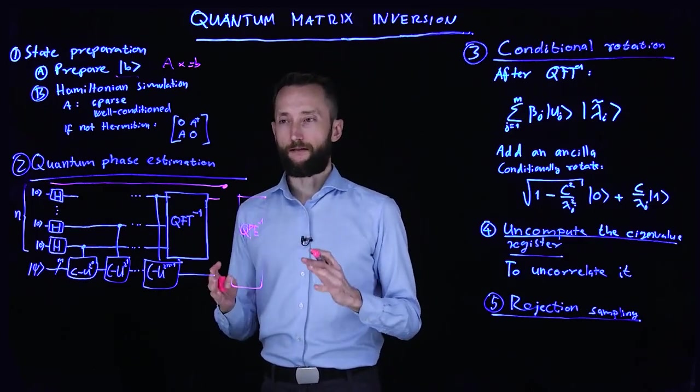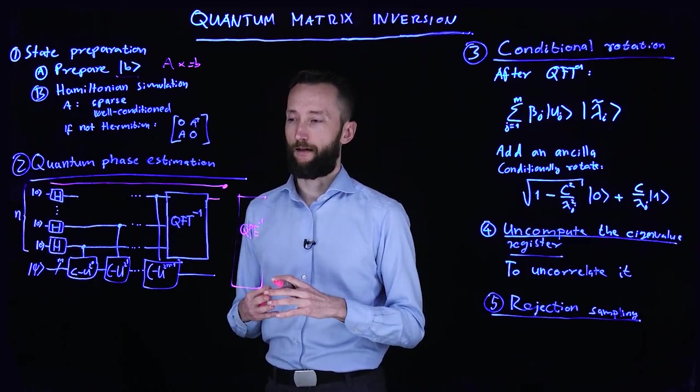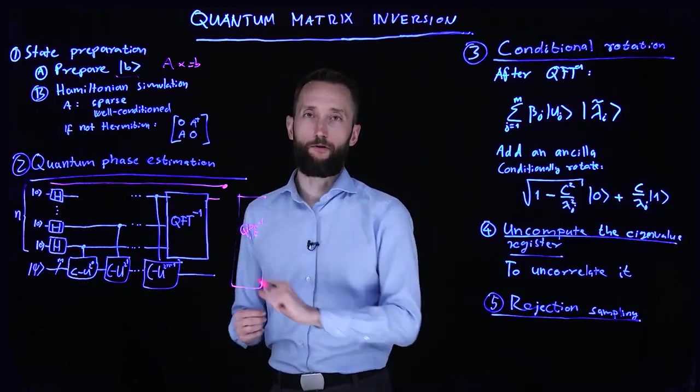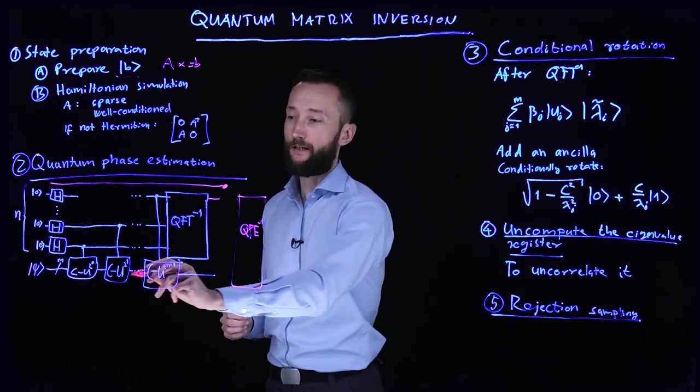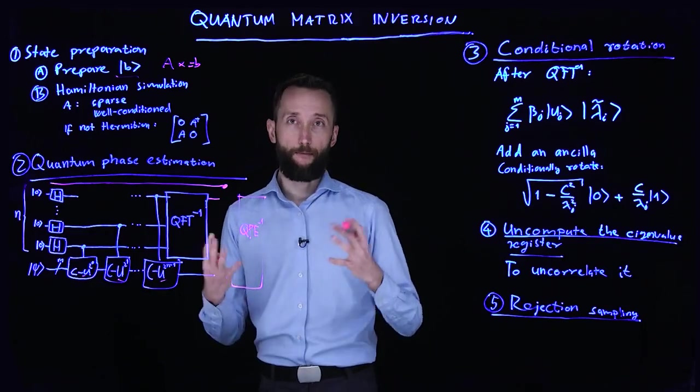Now, the second step is quantum phase estimation, which we explained in much detail. So inside it is a quantum Fourier transformation. And then you have these controlled unitary applications. So this is where the simulation of A comes in as a Hamiltonian.